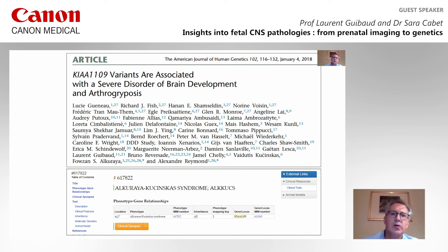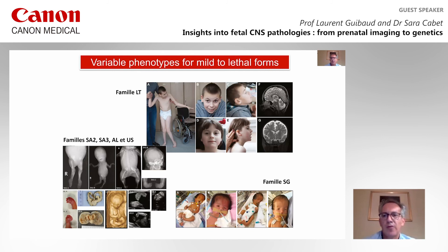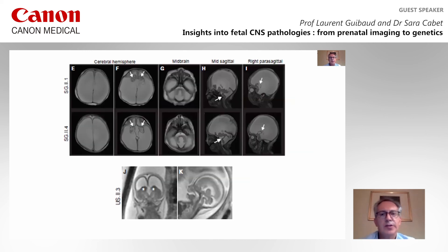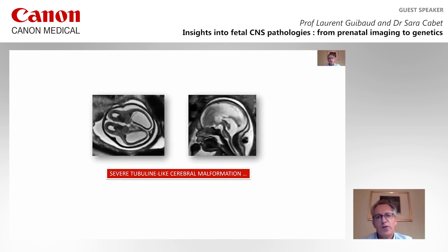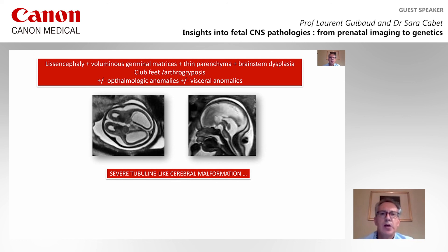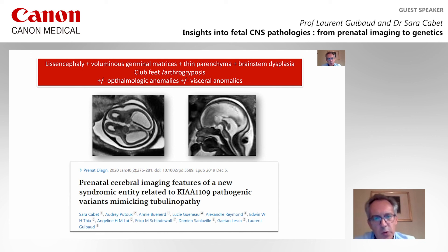It is a condition with variable phenotype going from mild to lethal form. As in the case from Singapore, you have exactly the same kind of imaging with very elongated pons. This is a case from the United States with the same pons morphology with a very huge germinal matrix with some cysts within it. So when you have severe lissencephaly-like cerebral malformations with cystic anomalies, clubfoot, arthrogryposis, ophthalmic anomalies, and visceral anomalies, you should think about this new entity related to CHIAAA1109 variants.